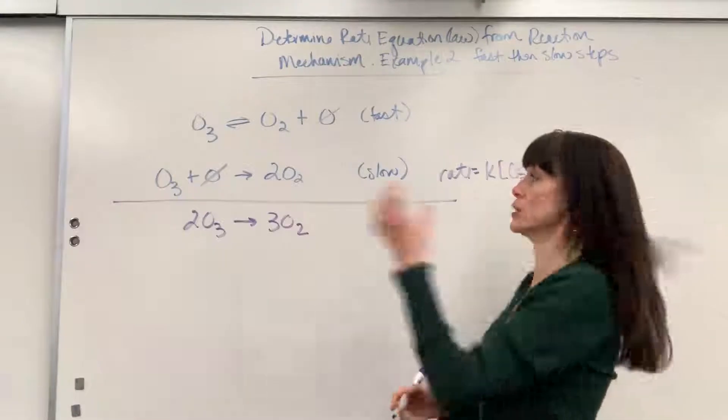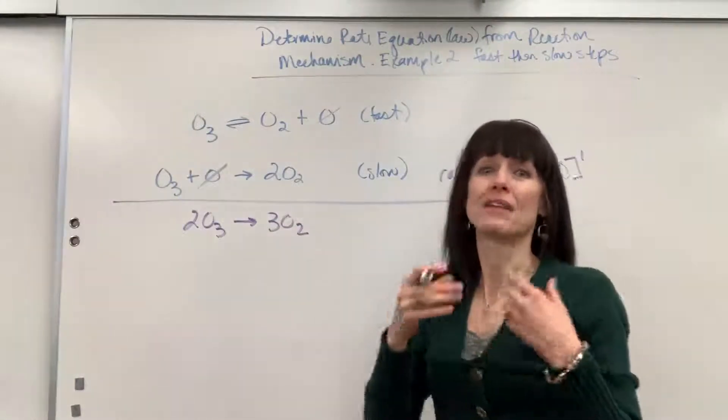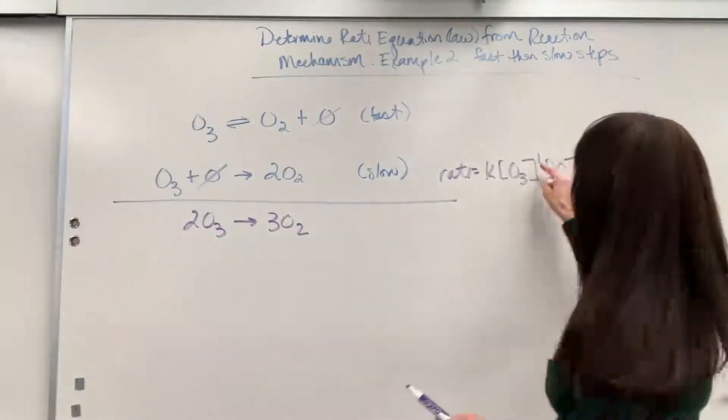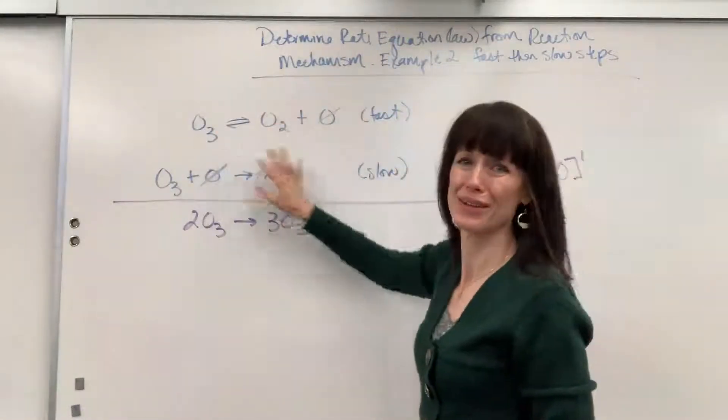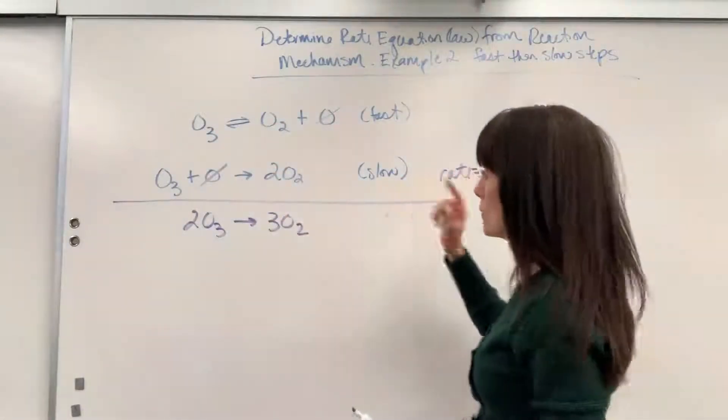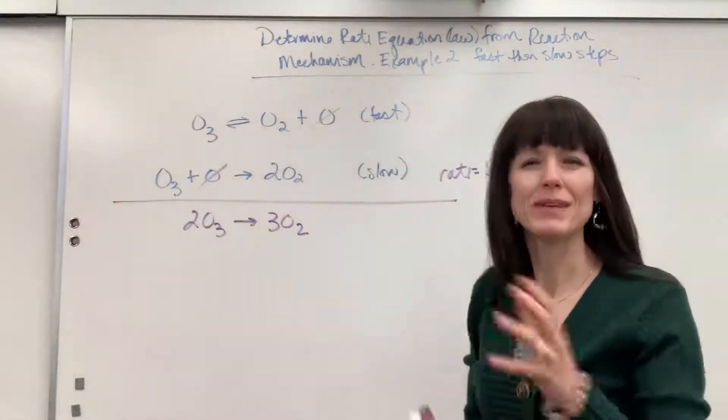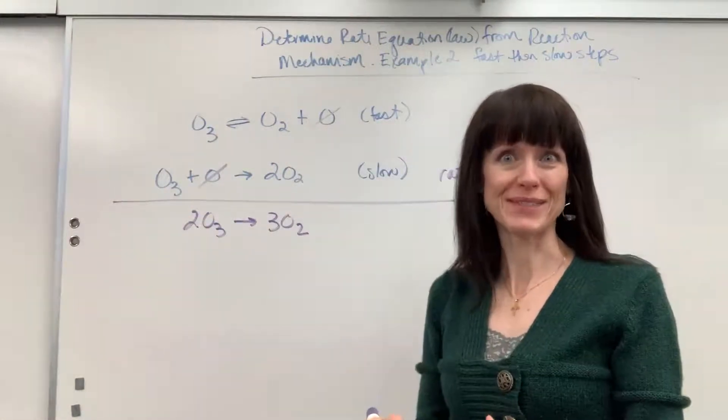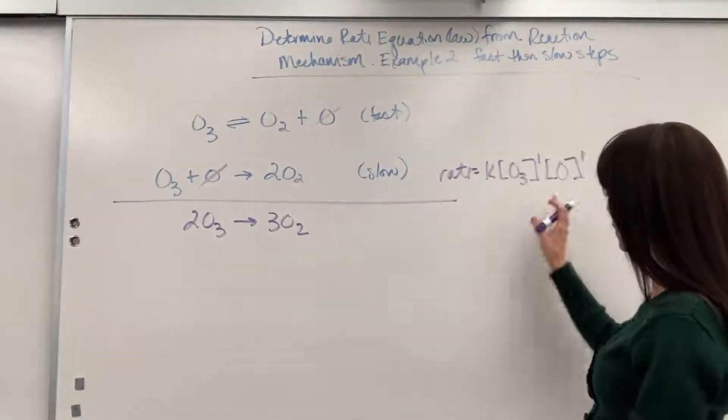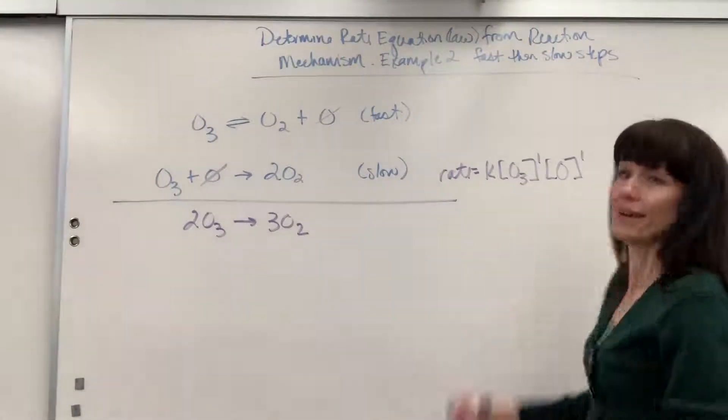Now, if we were given true experimental data, we'd have to mathematically determine those orders. But because this is all theoretical anyway, we make the assumption that the coefficient is the order. So a little bit different than when we're really using data from experimentation. Okay, so here's my rate law.